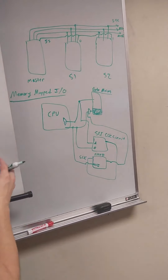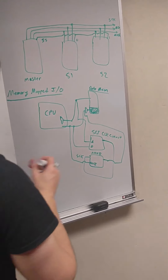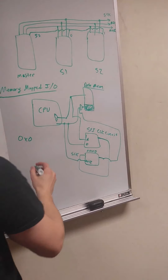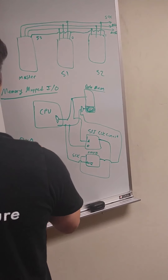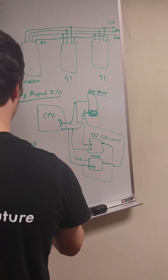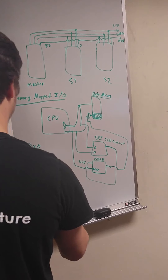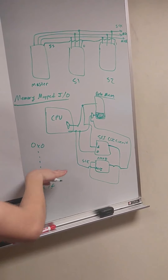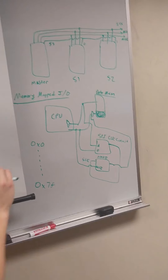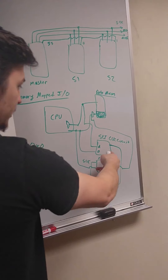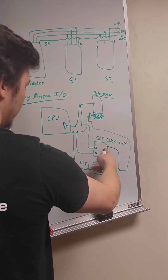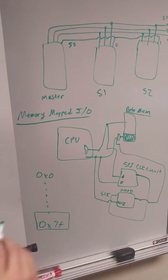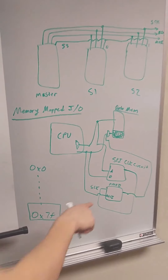The idea is that in your data memory you have address ranges from, let's say, zero to some small number — those are the 32-bit words you can store. For memory-mapped I/O, what if we partition a chunk of those address ranges just to talk to those peripheral devices instead?